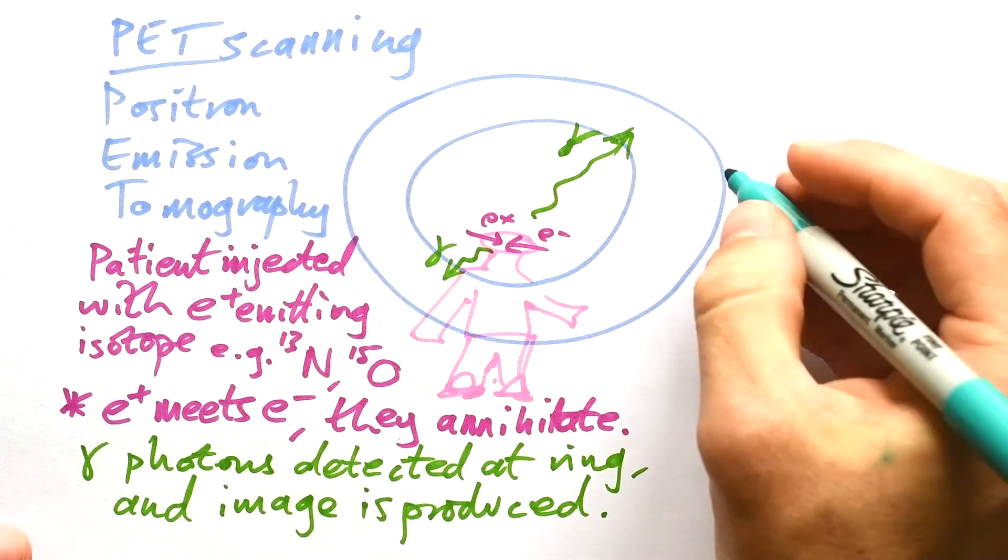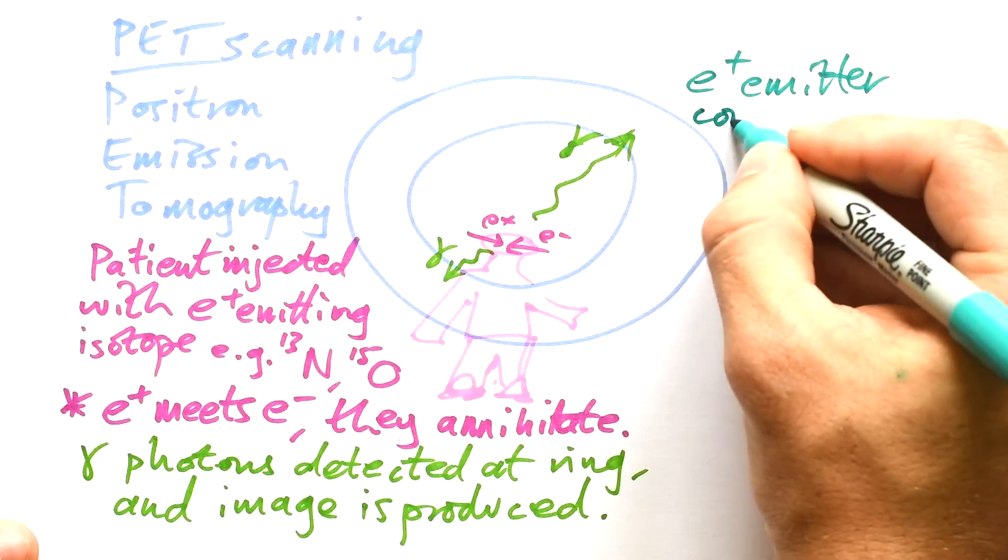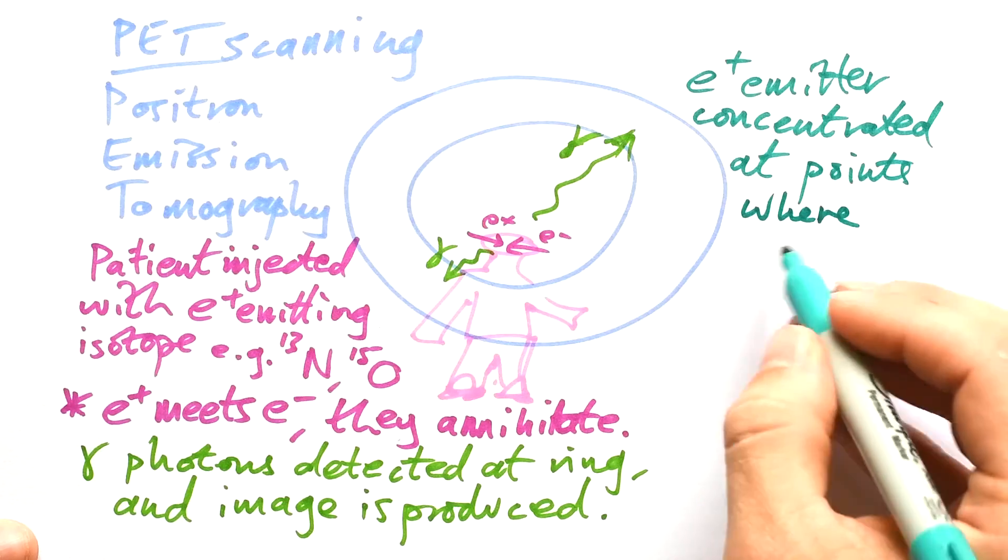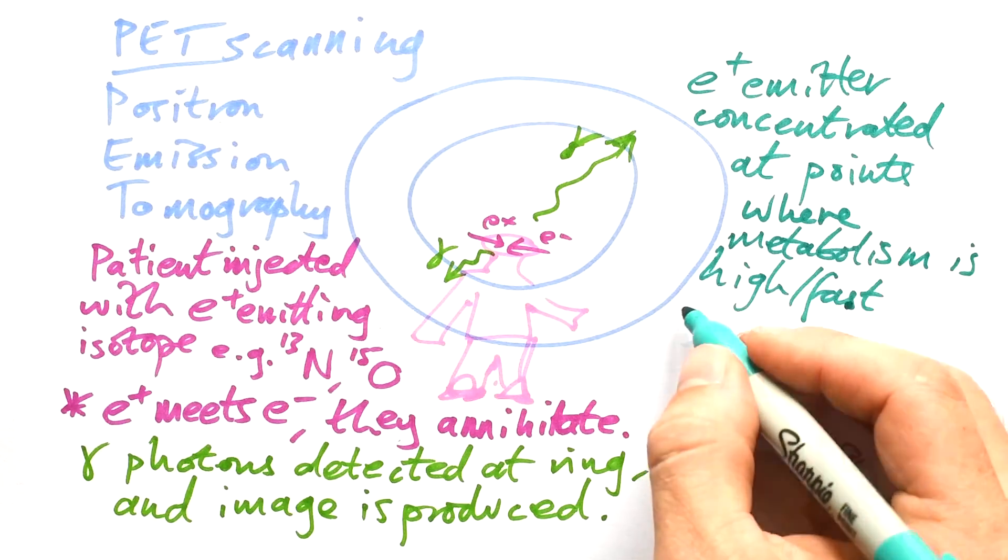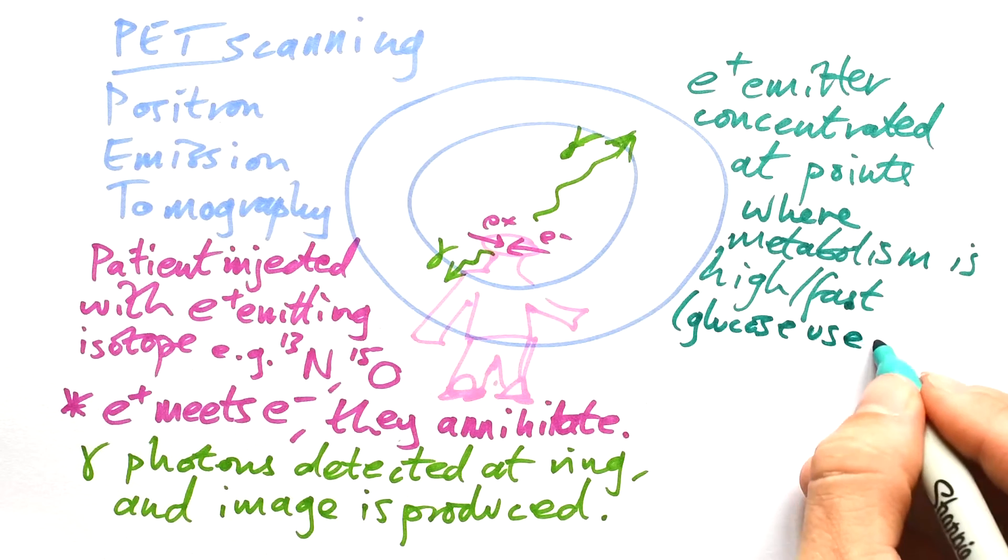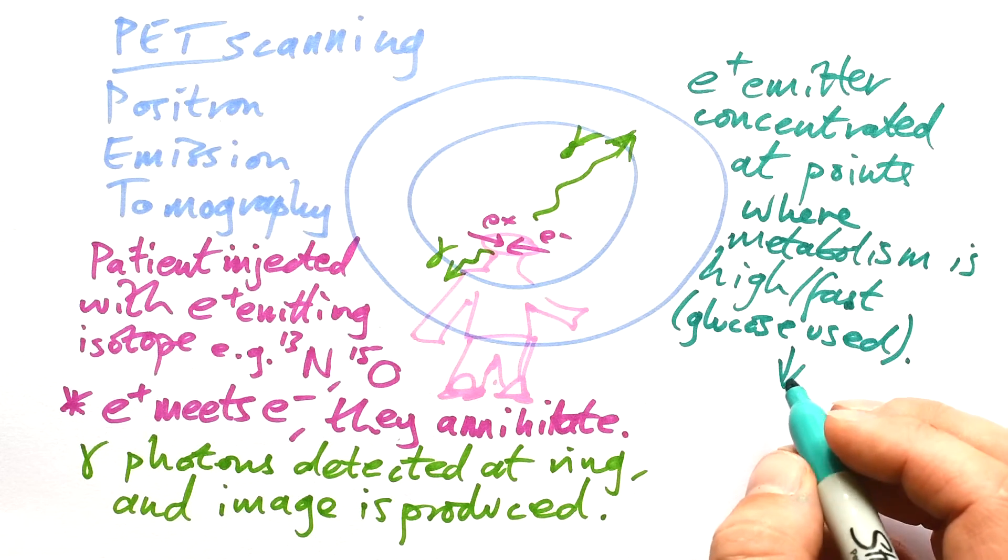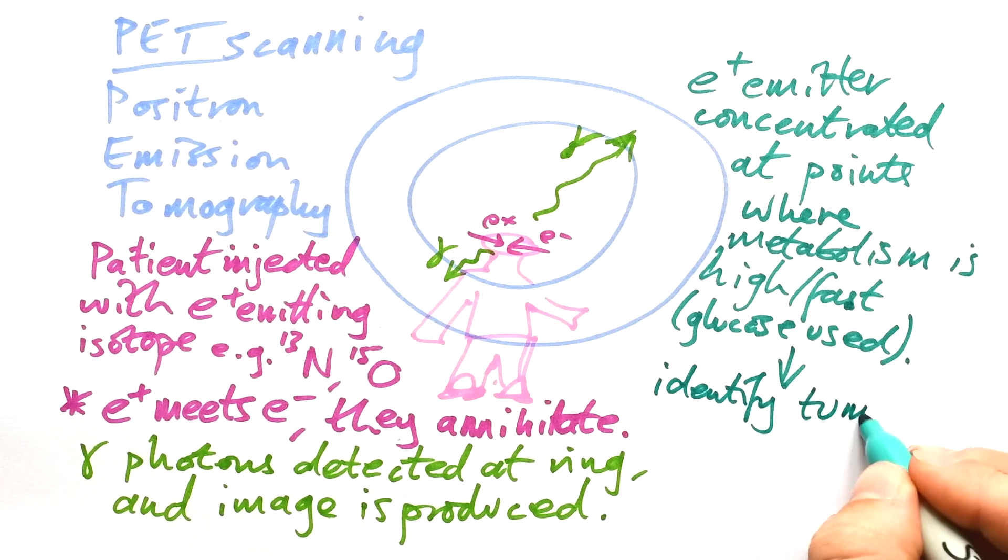So what is the advantage of a PET scanner over MRI? Well, the really good thing about these is that the positron emitter ends up being concentrated at points in your body where metabolism is high or fast. And again, that's because glucose is used, just like we saw earlier. So you might have cells that are metabolising, they're respiring very, very quickly, too quickly and growing out of control. And so you can see where they are. What is that? You can identify tumours using this.